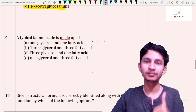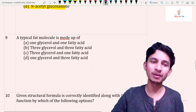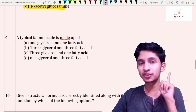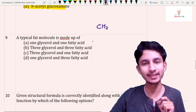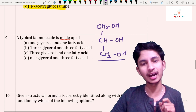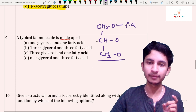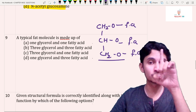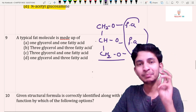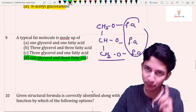Question number nine: a typical fat molecule is made up of — fat is composed of glycerol and fatty acids. Glycerol is a three-carbon alcohol: CH2OH–CHOH–CH2OH. Each carbon can have a fatty acid attached after removing H. So glycerol plus three fatty acids combine to form a fat molecule. Answer: option D — one glycerol plus three fatty acids. This question has appeared in previous exams.